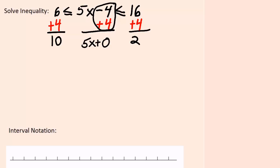What that leaves me with is 10 is less than or equal to 5x plus 0, which is less than or equal to 20. So 10 is less than or equal to 5x, which is less than or equal to 20. Now I have to have x all by itself,